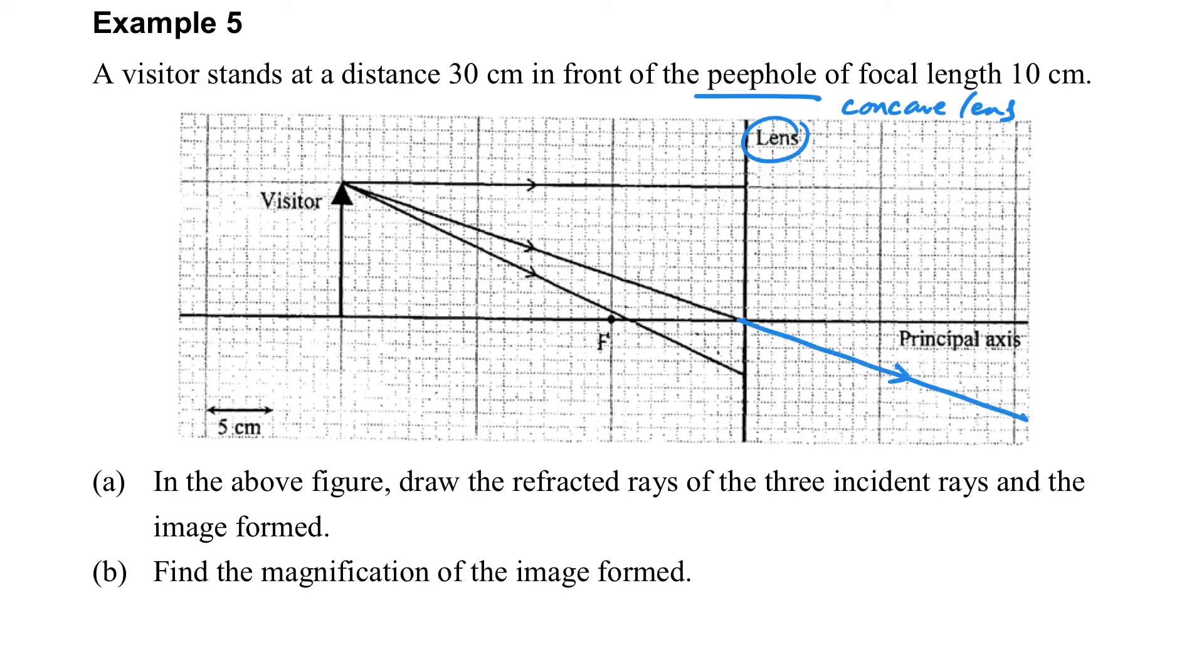And then how to find the image and draw the refracted ray by rule 3 and rule 1, we can complete two light rays. And how about the last light ray? We have to draw the image first, and because all the light rays will follow the position of the image, we can draw the refracted ray here and complete these three light rays.